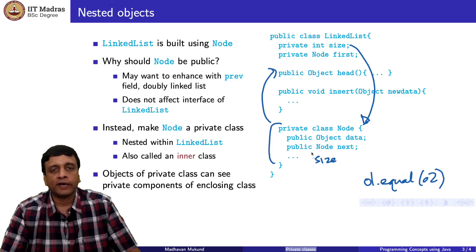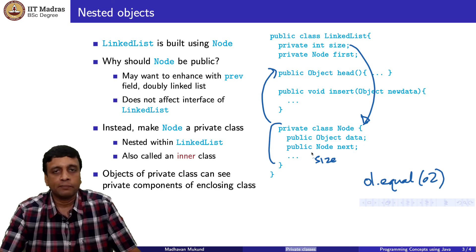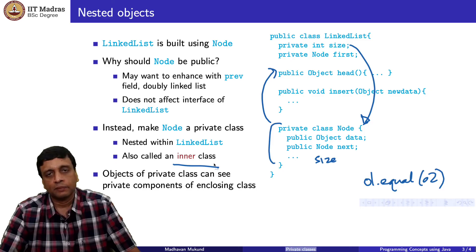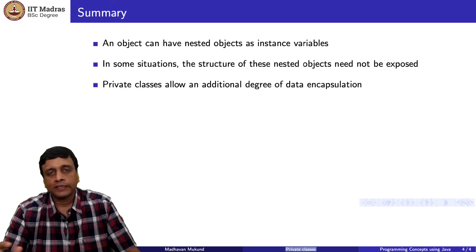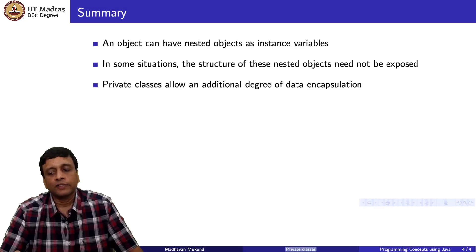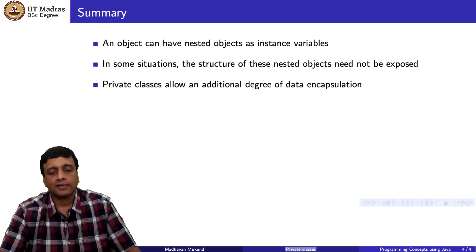To exploit private classes to the fullest, we need them to be able to access other parts of the object inside which they reside. Since they are private, if they were outside the class nobody could see them — including the class itself — so they must be inner classes, defined inside the public class that uses them. An object can have nested objects, and in some situations the structure of those nested objects need not be exposed. You can bury that extra object inside the public object as a private class and gain an extra degree of data encapsulation.